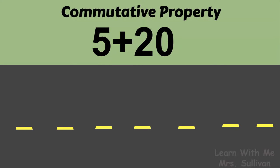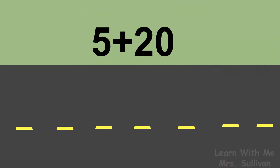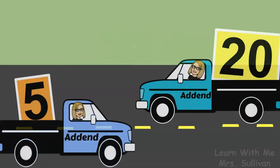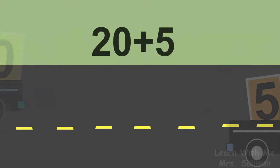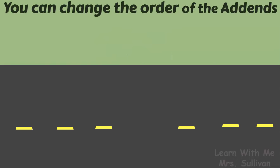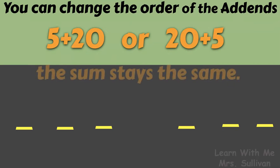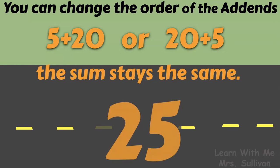Thanks to the commutative property of addition, we can change the order of the addends and make it easier for us to solve the equation and find the sum. You can change the order of the addends, 5 plus 20 or 20 plus 5. Either way, the sum stays the same. It's 25.